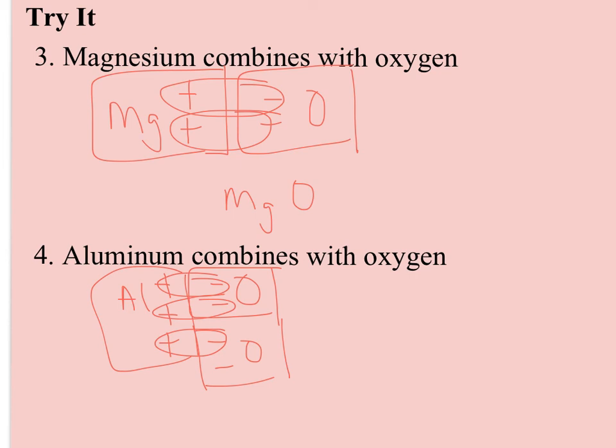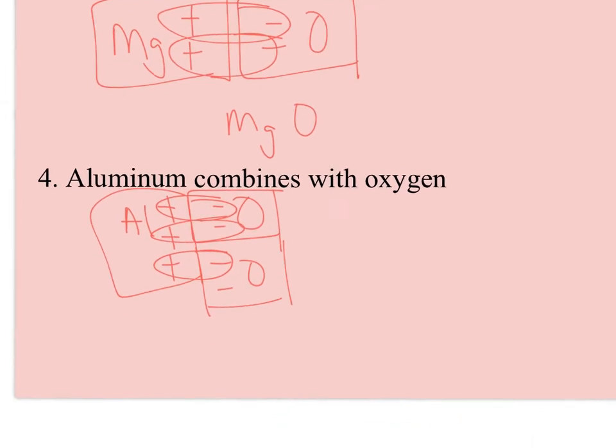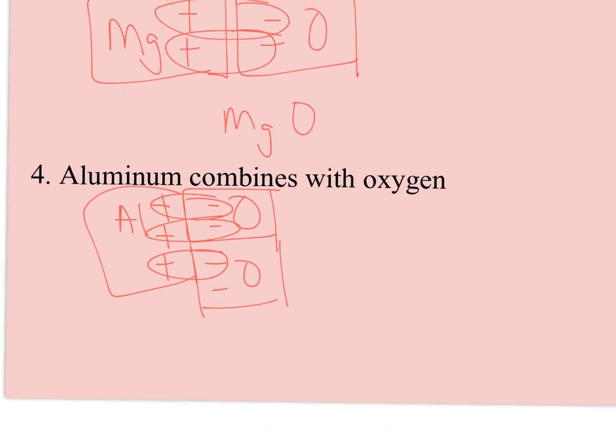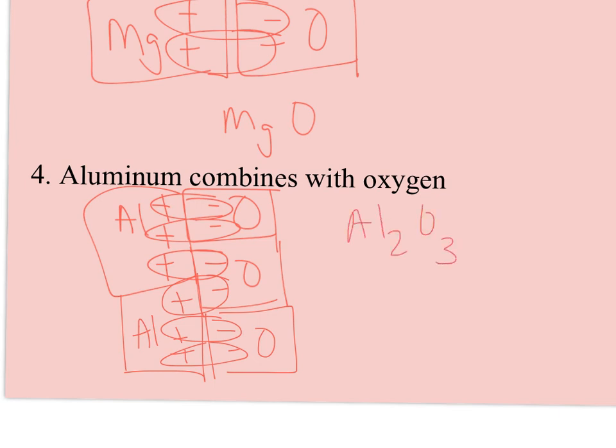And just when the whole thing looks hopeless, I can bring in a third oxygen, and I finally have an equal number of electrons being lost, six electrons from two aluminum atoms, and those six electrons are being gained by three oxygen, so I would write this Al2O3.